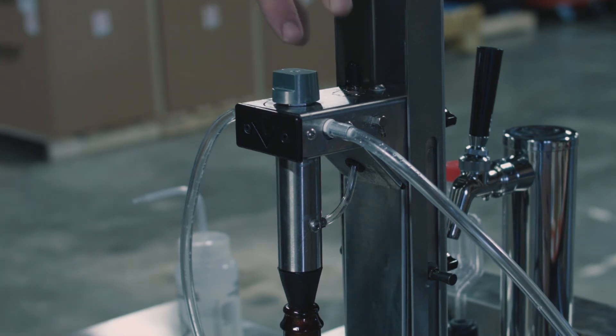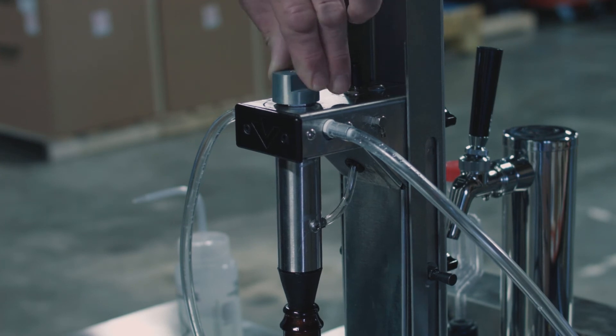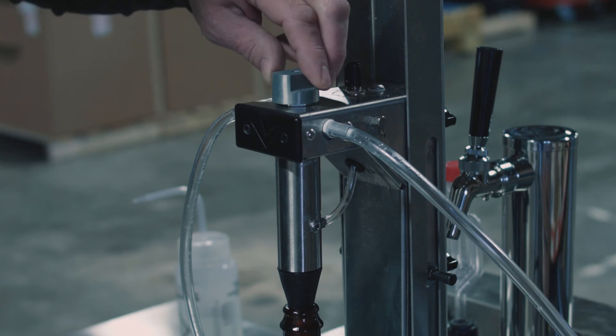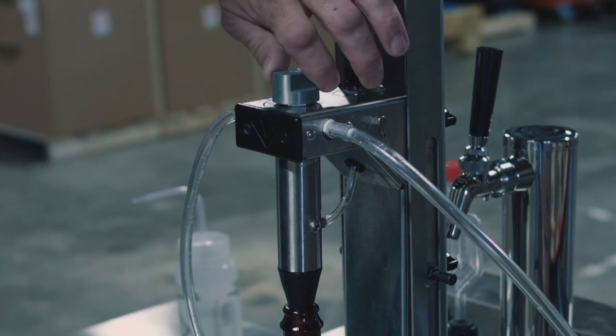Once we've done that, we can go ahead and turn the control valve back into the off position and from there to the beverage fill position.